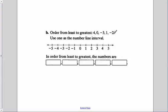If we're ordering from least to greatest: 4, 0, negative 3, 1, and negative 2, I need to actually plot my points on the number line. So I'm going to put my point at 4, at 0, negative 3, 1, and negative 2. Order from least to greatest: my least would be negative 3, the next would be negative 2, the next would be 0, followed by 1, and then the greatest is 4.